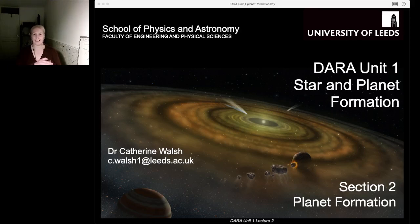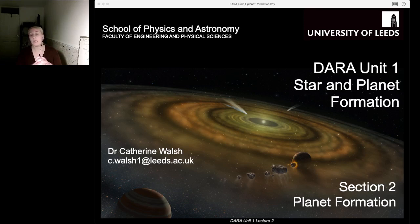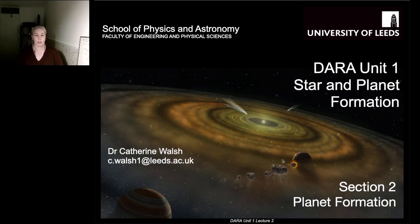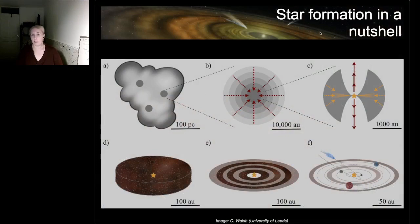Hello everyone and welcome back to the second lecture for the Darwin Unit 1 training. This time we're going to move on and focus on planet formation. In lecture one, just to recap, we looked at the different observations used to probe star forming regions in the interstellar medium and talked about how stars form from the gravitational collapse of molecular clouds. So in this second part of the lecture course, we'll do a little recap of star formation.